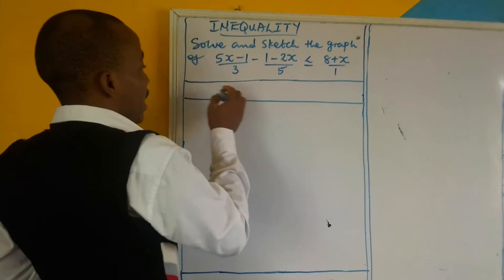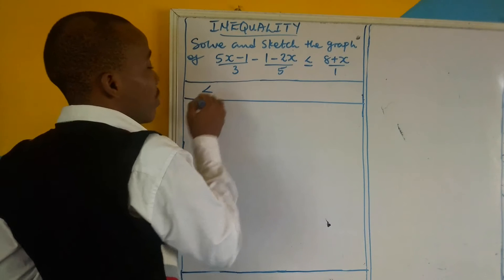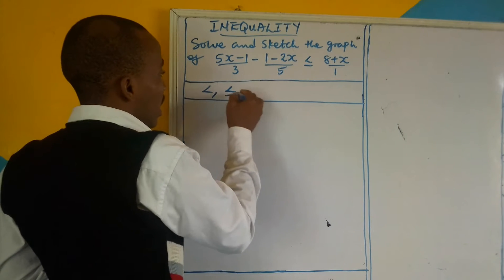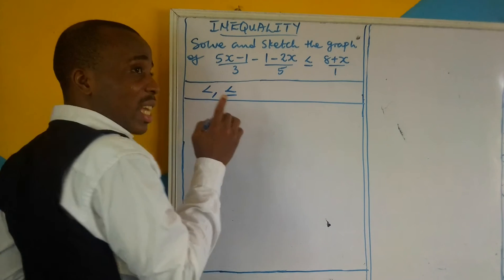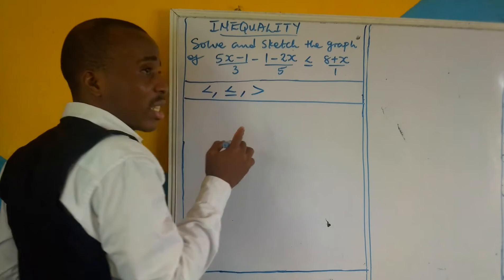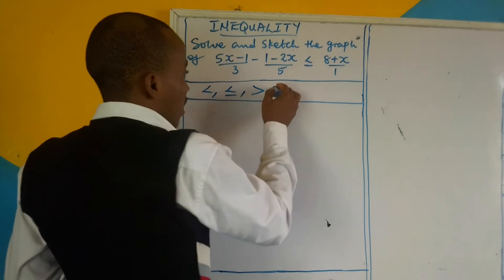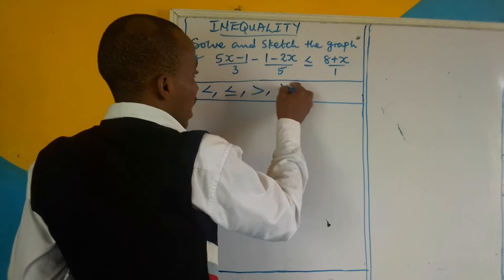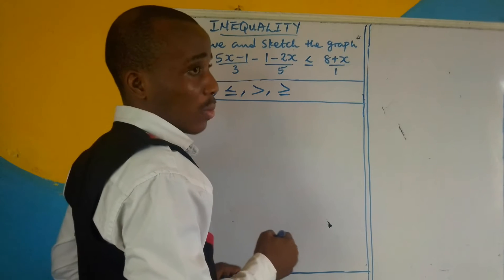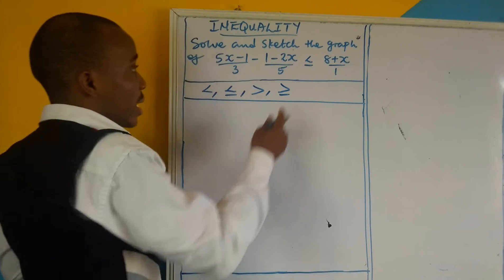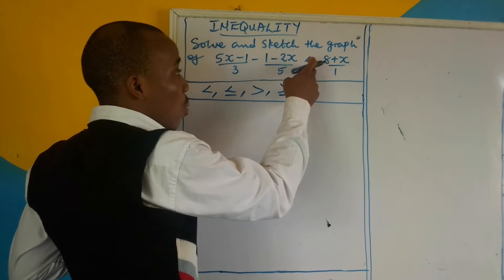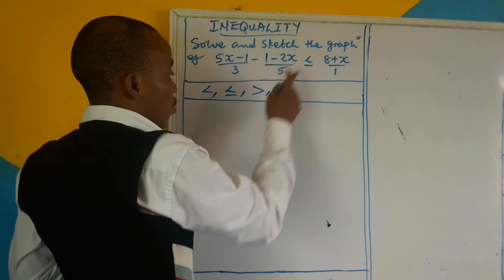When the sign is like this, it means less than. When it is like this, it means less than or equal. When it is like this, it means greater than. And when it is like this, it means greater than or equal to. And since the sign is like this, it now means it is less than or equal to.